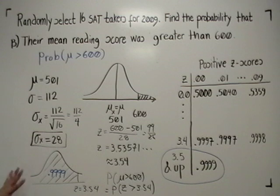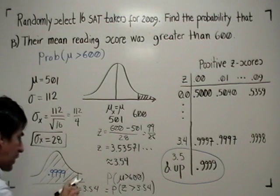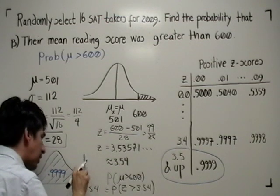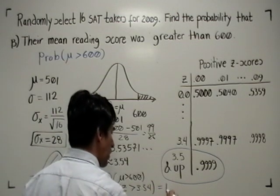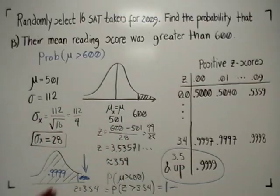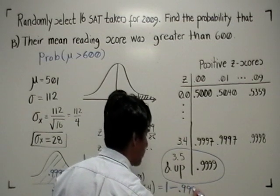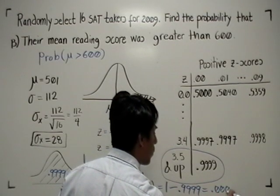How do I find that? Well, I am going to take the area under the whole curve, and I am going to subtract this portion, so that I can get what I want. I want this area. So that area equals 1 minus the area to the left, which is 0.9999, which is 0.0001.